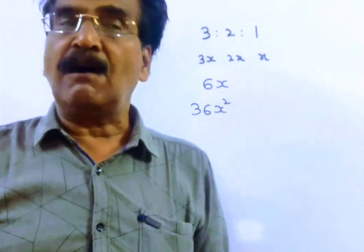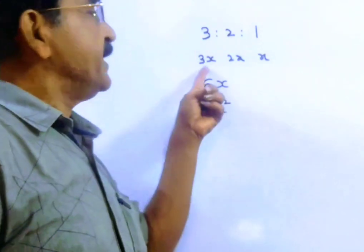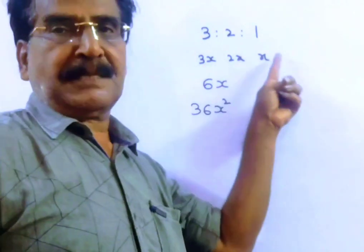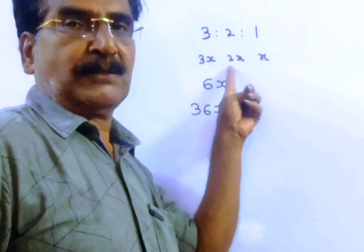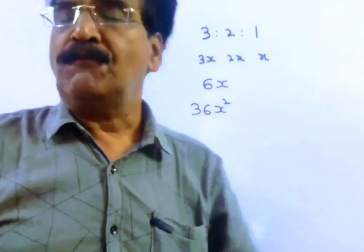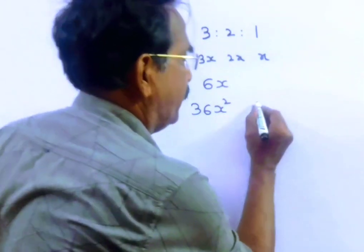And the price of the three pieces of the diamond after it was cut is 3x whole square plus 2x whole square plus x square. That is 9x whole square plus 4x whole square plus x whole square, which is 14x whole square.